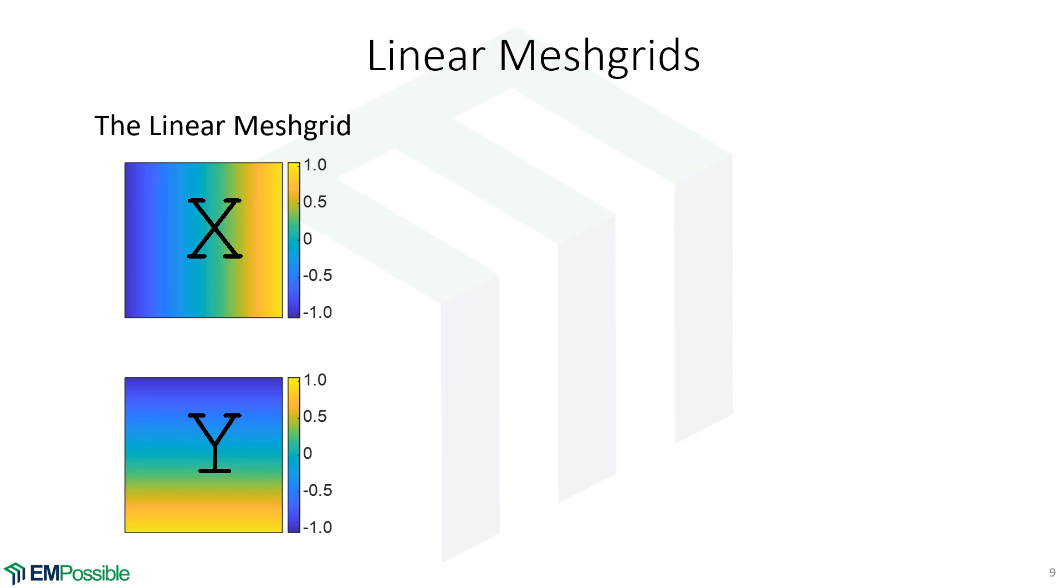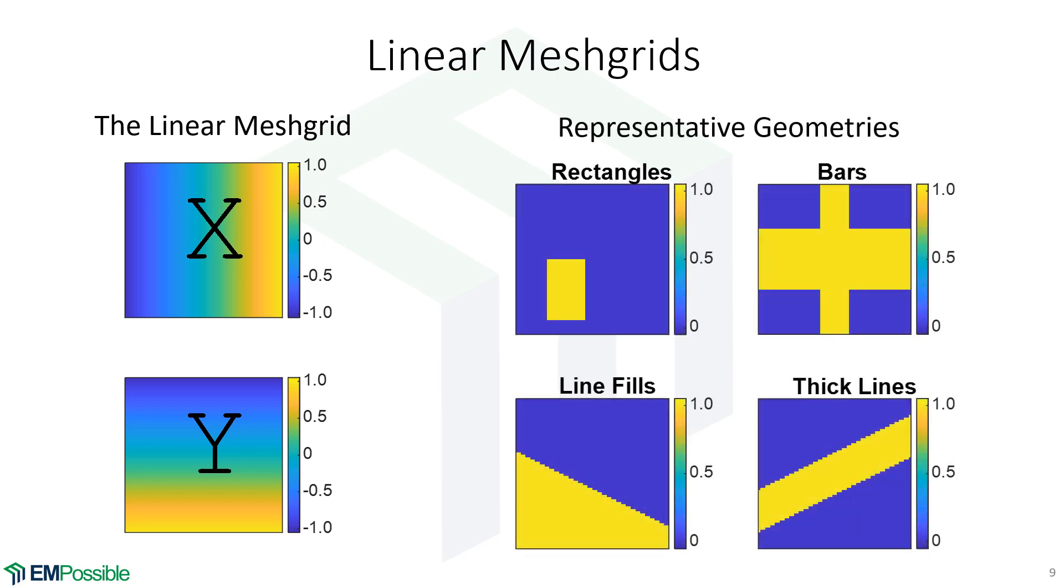We'll finish with some quick examples of different meshgrids and what they can do. We've already talked about a linear meshgrid - here's some things it can do. Rectangles, even offset rectangles, bars and crosses. We can enter equations for lines and do fills above or below those lines. We can also do thick lines in any direction - geometries that are sort of Cartesian-ish we can do with linear meshgrids.